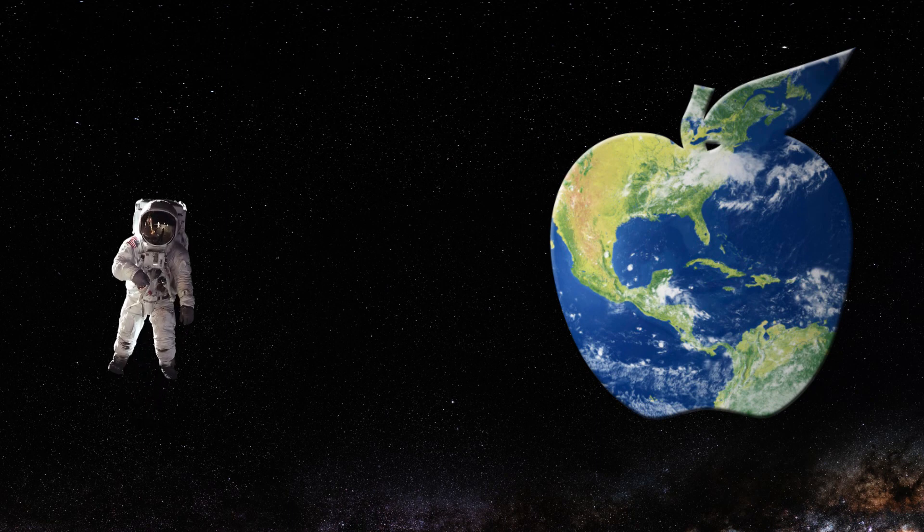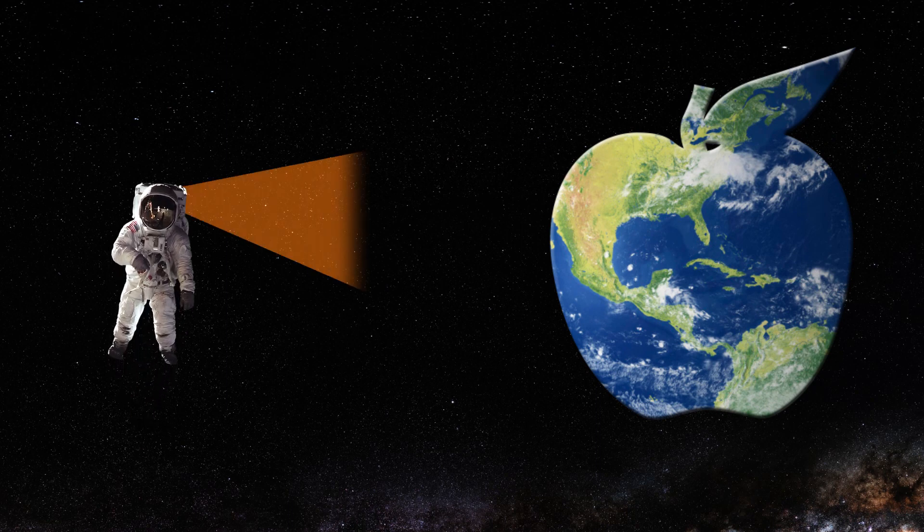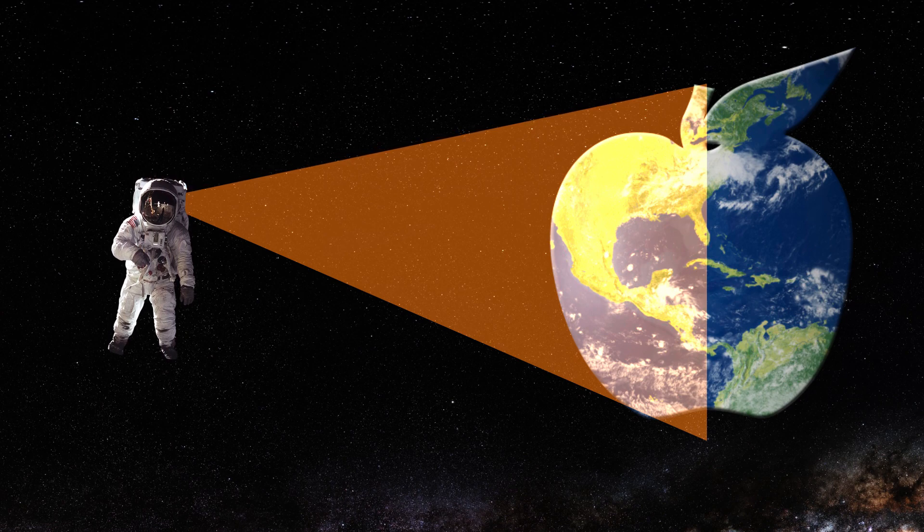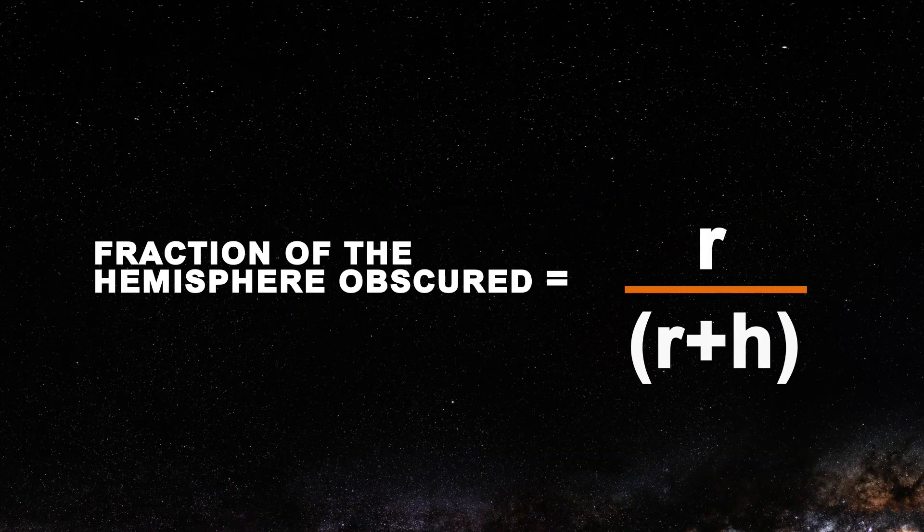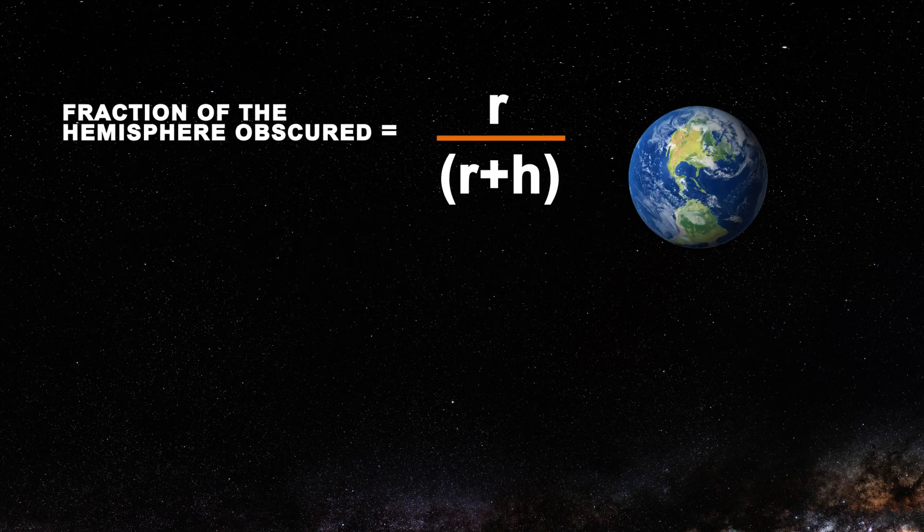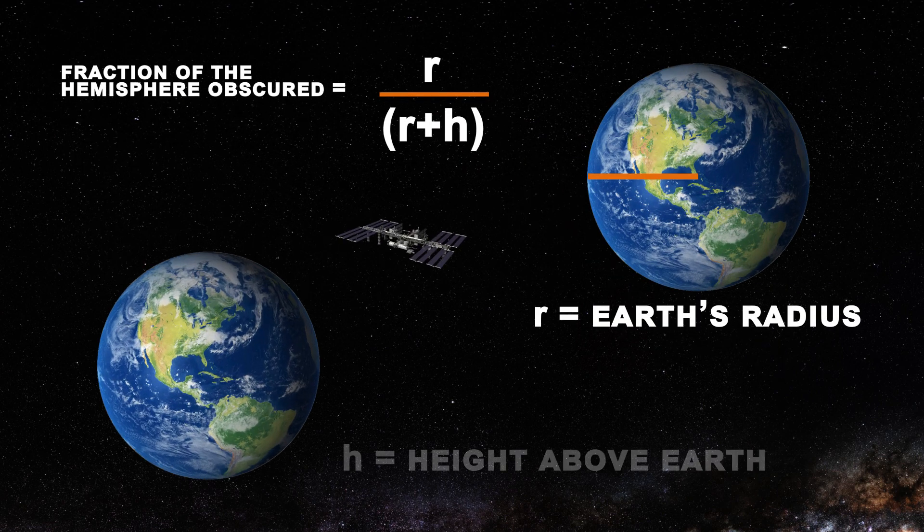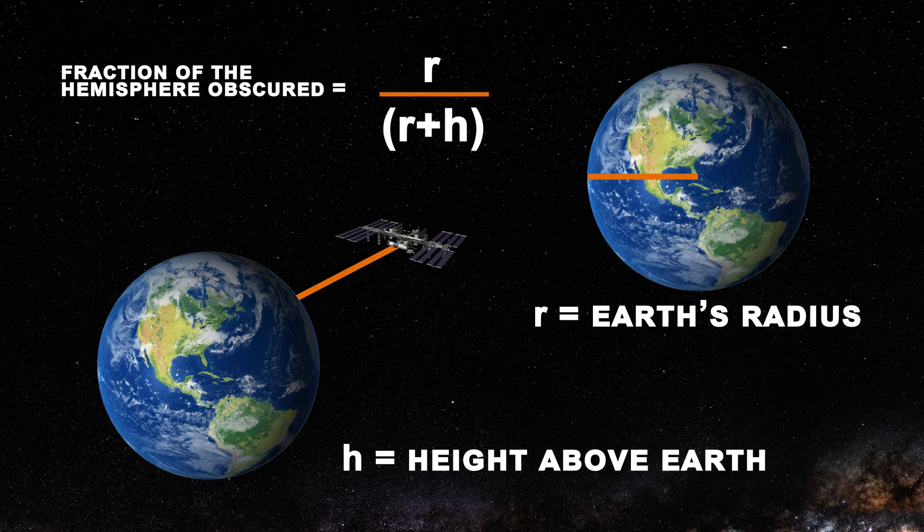how far away do you think you would need to be to see a full hemisphere or half of the Earth? Well, there's an elegant and simple equation for this. The fraction of the hemisphere obscured equals r over r plus h, where r is the Earth's radius and h is the height above the Earth.